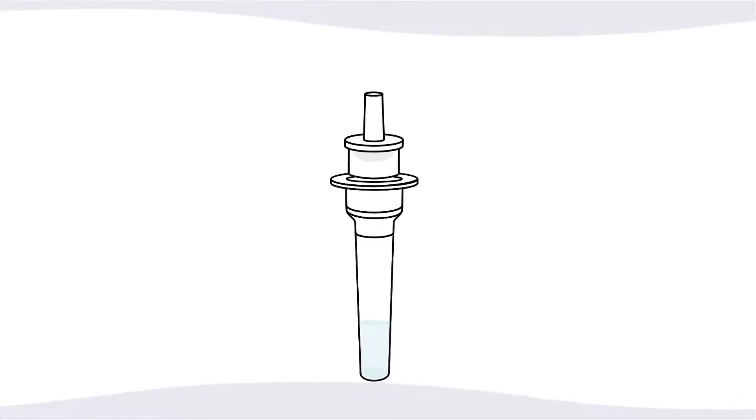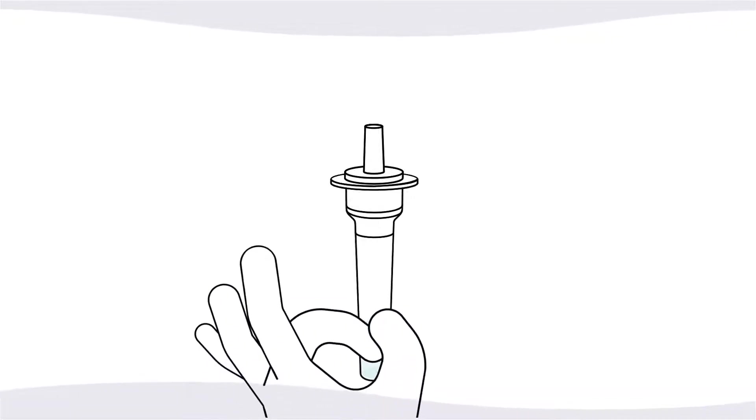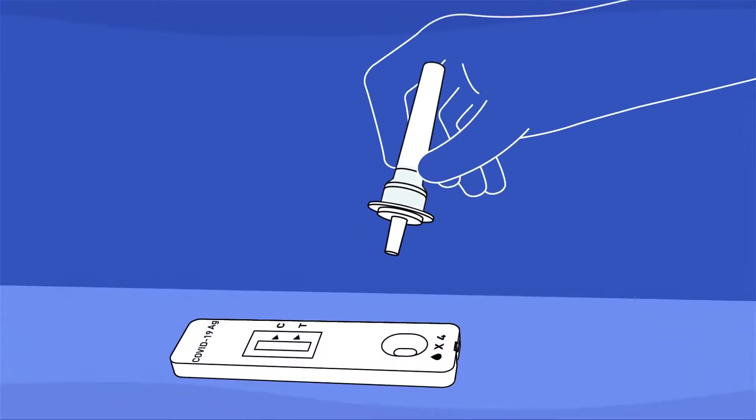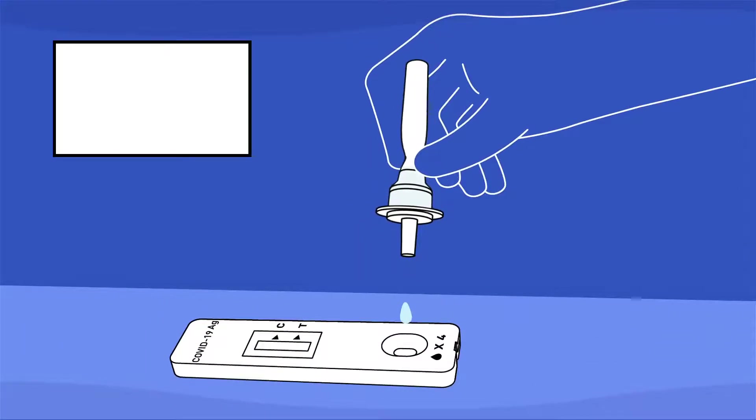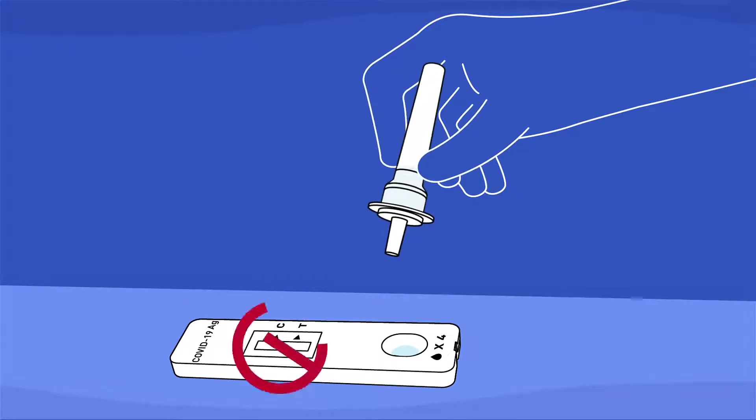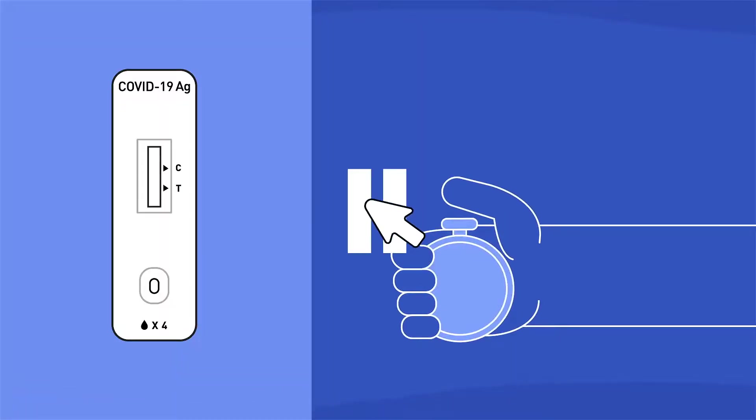Now close the tube with the filter cap, nice and tight. You can help the mixing process by giving the buffer tube a little flick. Now we're going to put that mixture into the sample well. Hold and squeeze the tube in the upright position. Gently allow 4 drops of sample to fall into the sample well. Make sure not to drop the liquid in the rectangular result window.